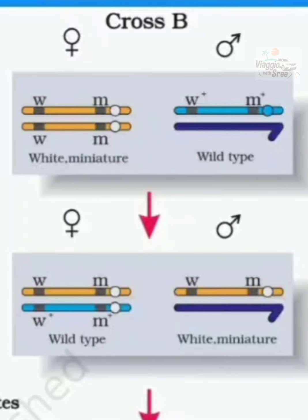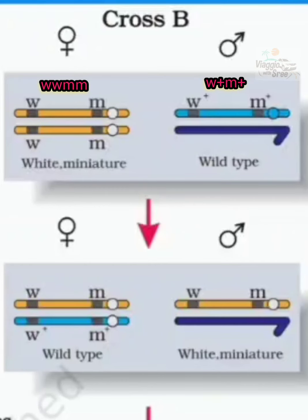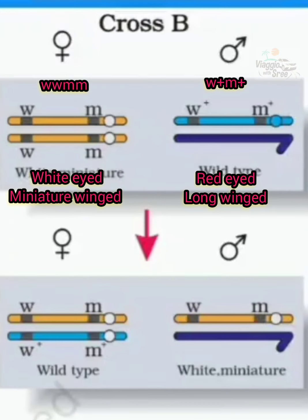This is Cross B. The female here is white-eyed and miniature-winged — small w, small w, small m. That is the white-eyed miniature-winged female, which is homozygous recessive. The male is the wild type dominant: red-eyed, long-winged male. These are X-linked characters involving eye color and wing size.